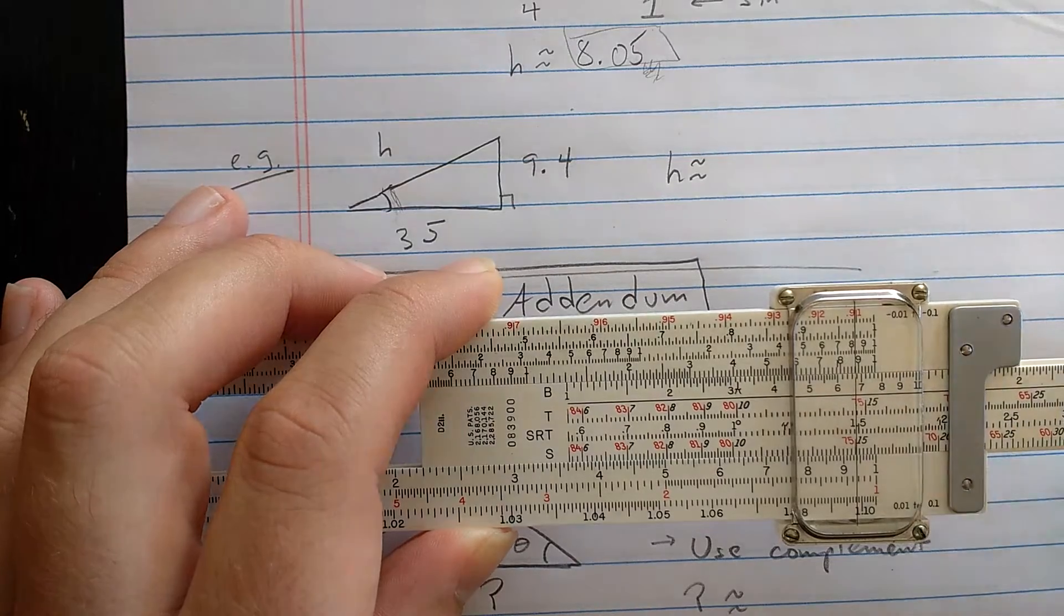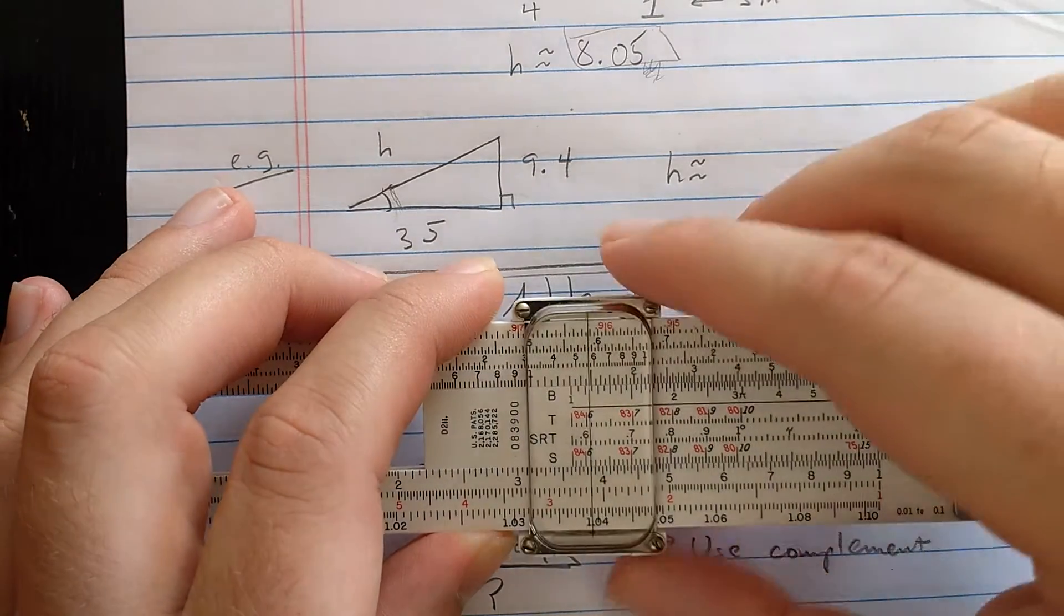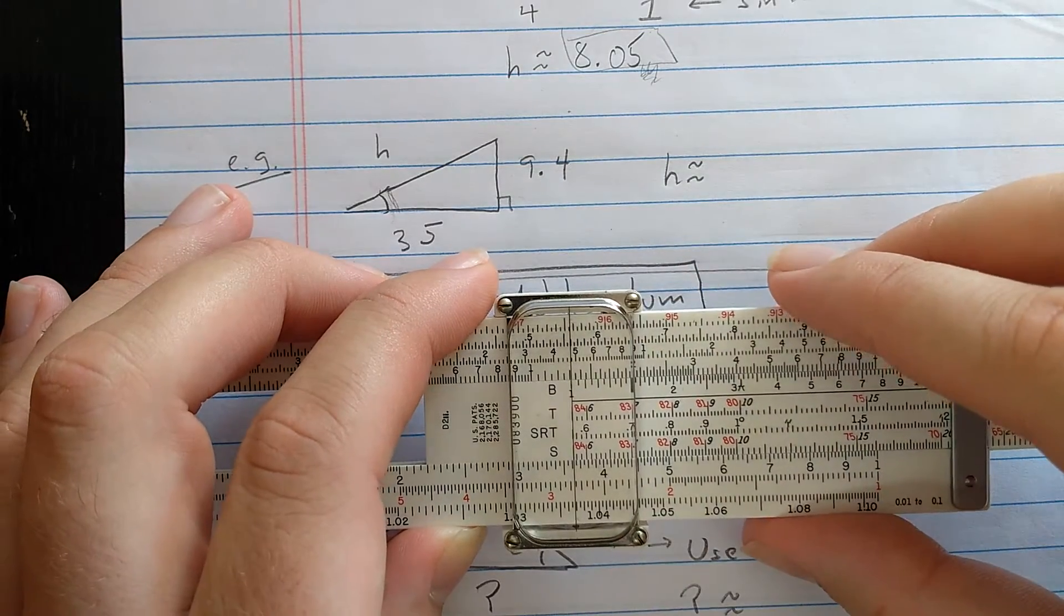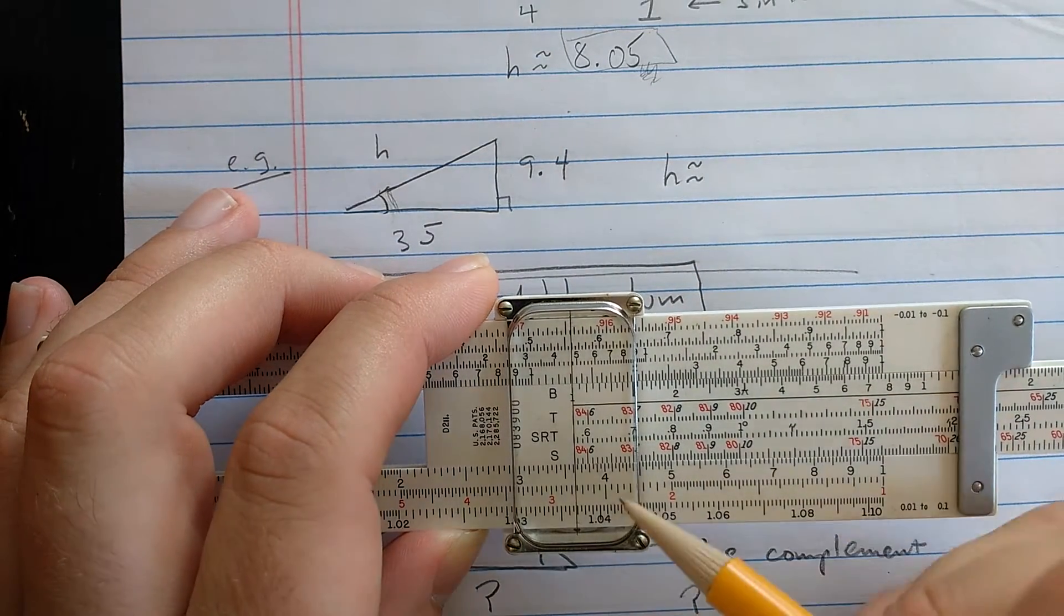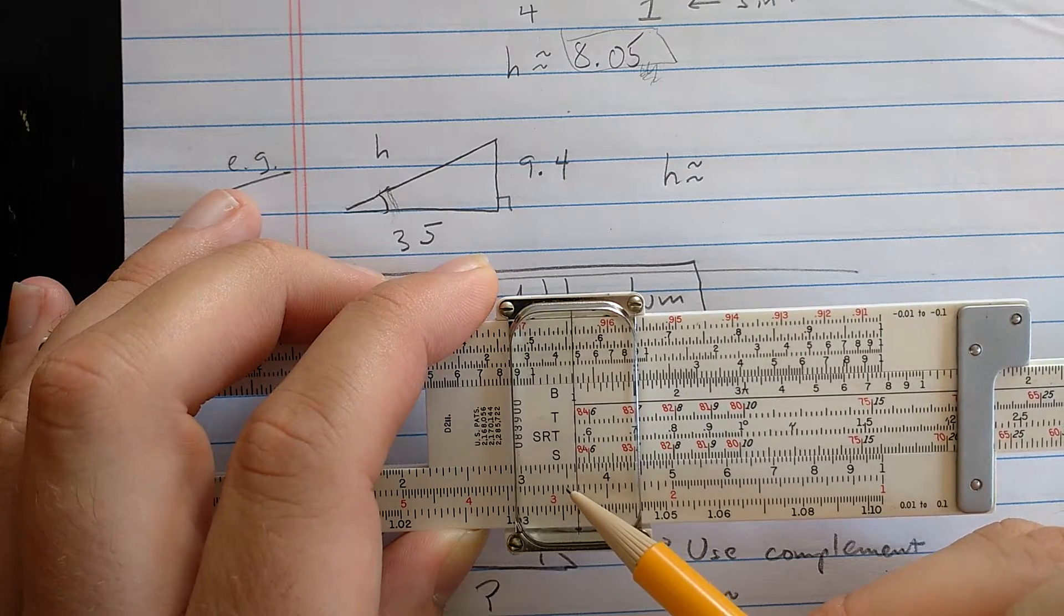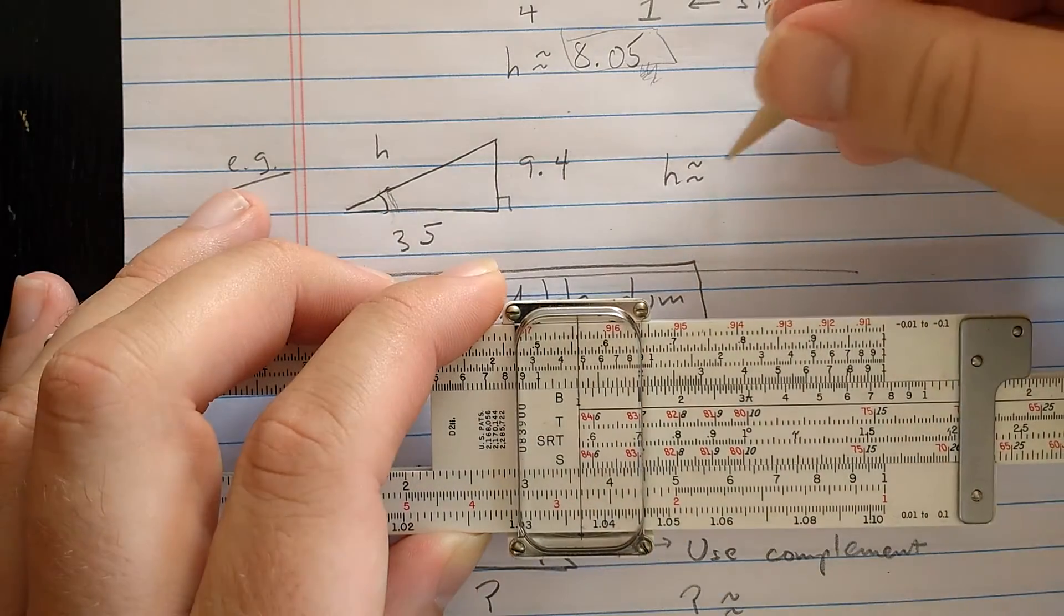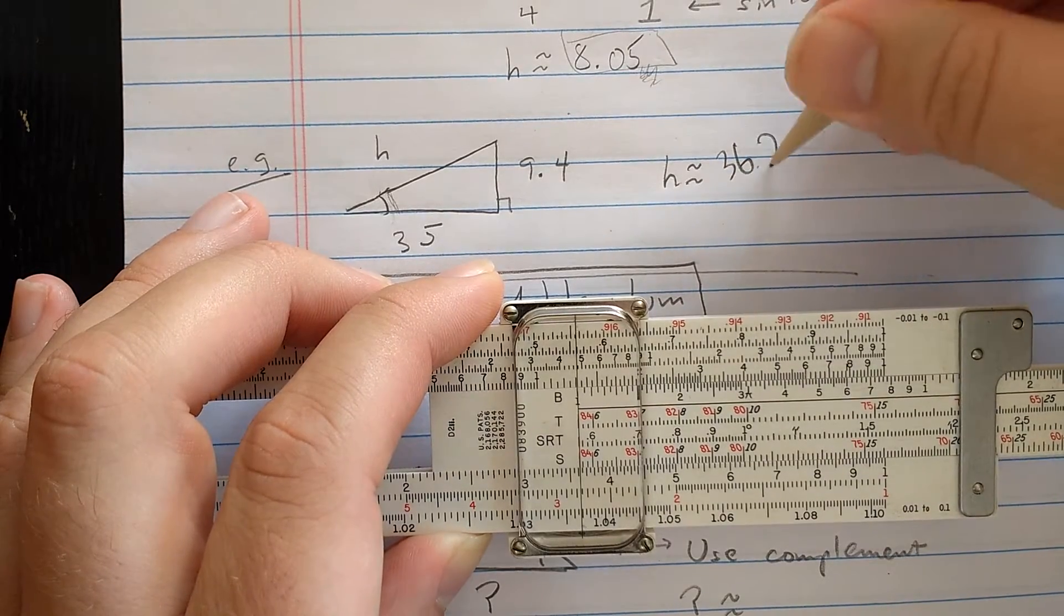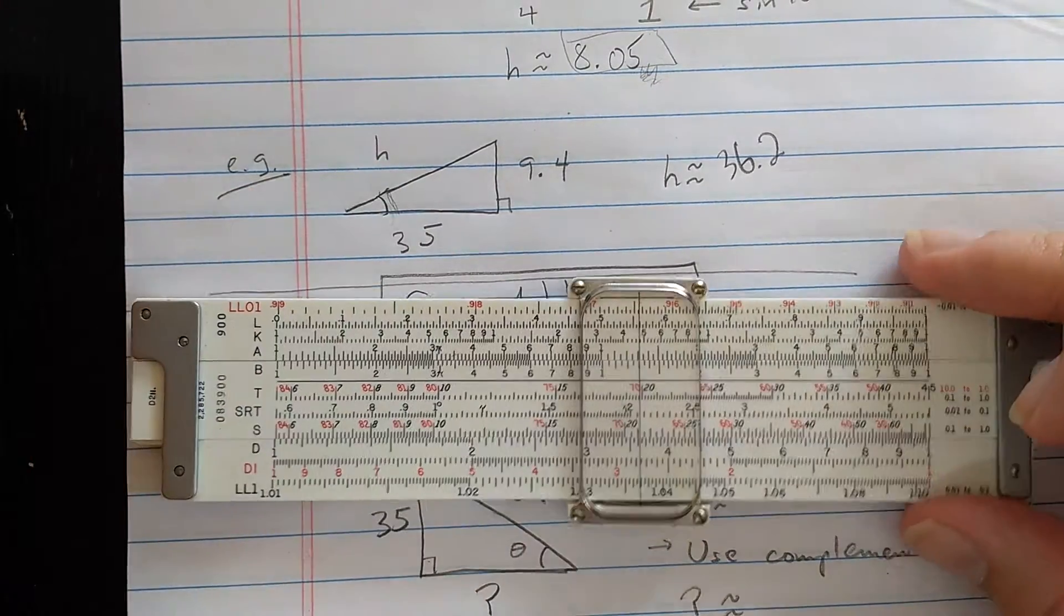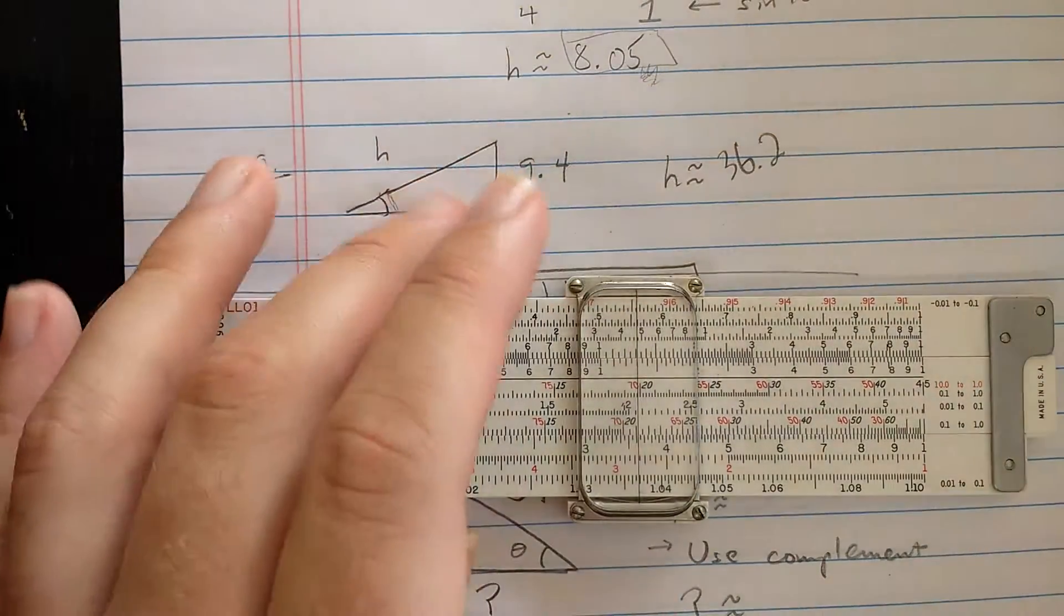Then I come to the end, because when I'm using the law of sines computation, at the index of the S scale is the hypotenuse length, and that looks like about 36.2. So there is a fast way to do that, and it doesn't involve flipping the slide rule over.